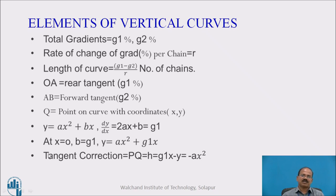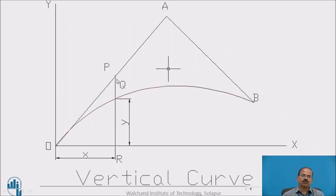The most popular method for setting the vertical curve is tangent correction method. In the sketch that I have shown, we will see that PQ = H = G1X - Y = -AX². Here, PQ is this particular value which we are trying to evaluate. P is a point on tangent, Q is this particular point on curve which actually we are trying to identify. This vertical distance PQ with which the point should be lowered down is required to be calculated, which is also called the tangent correction.